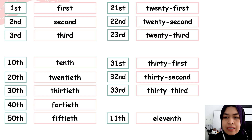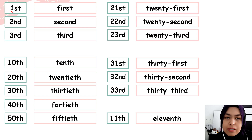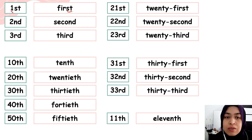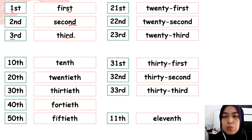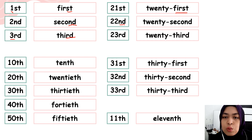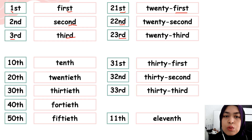Alright, so let's take a look at the spelling. For one, 'first' — it must follow with ST. Two, 'second' — ND. Three, 'third' — RD. The same goes with twenty-first, twenty-second, twenty-third. It follows the rule of first, second, third.